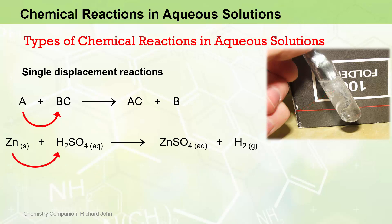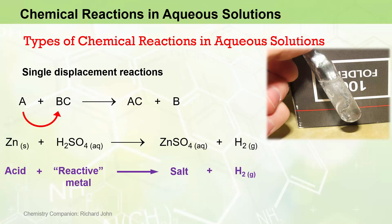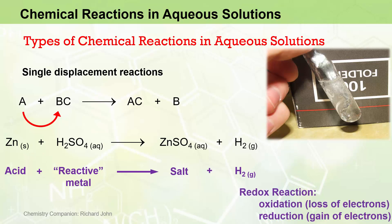Here, the zinc effectively displaces the two hydrogen atoms to form the zinc sulphate solution, while the hydrogen ions from the acid are chemically transformed into elemental hydrogen gas. This type of general reaction of an acid plus a reactive metal will always produce a salt of some type plus hydrogen gas, with this specific example involving sulphuric acid H2SO4 as the acid and zinc as the reactive metal. We will soon be readily able to identify this reaction as an electron transfer redox reaction, where one substance loses electrons by undergoing oxidation and another substance gains electrons by undergoing reduction.